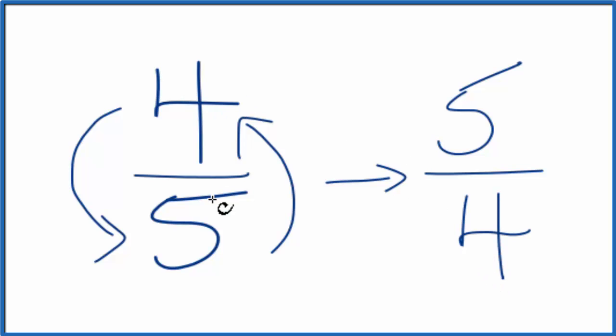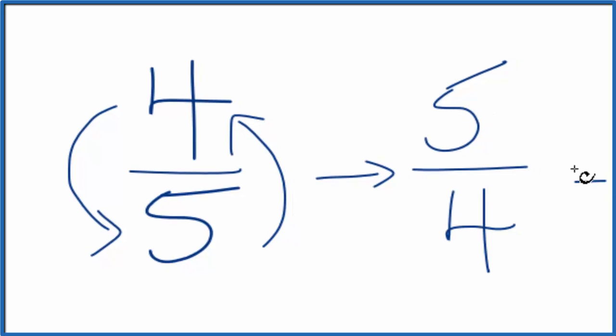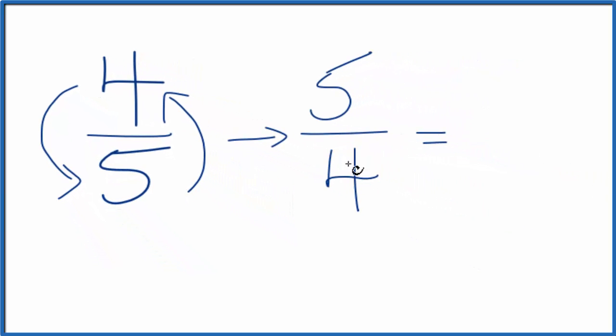The reciprocal for four-fifths is five-fourths. This is an improper fraction. Let's change it to a mixed fraction as well. Four goes into five one time with one left over. So we could also call this five-fourths one and one-fourth. They're equivalent.